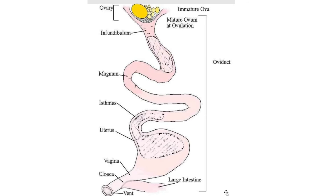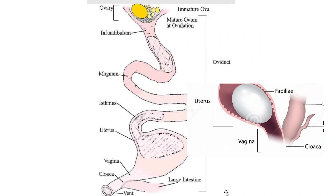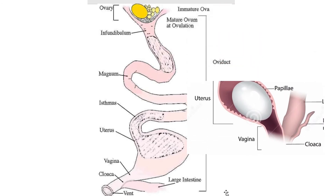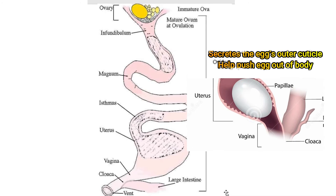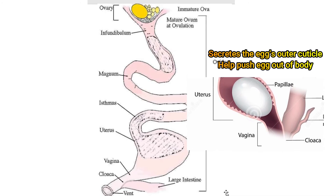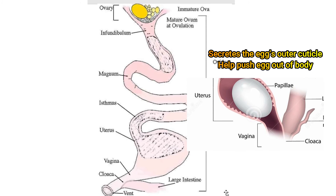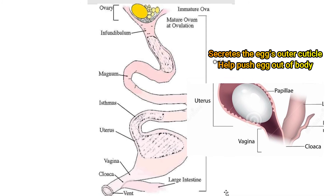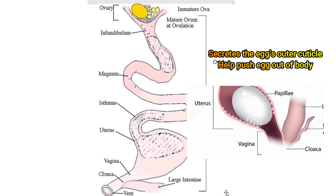The last section of the oviduct is the vagina, which is about 4 to 5 inches long. The vagina does not really play a part in egg formation, but is important in the laying of the egg. The vagina is made of muscle that helps push the egg out of the hen's body. The bloom or cuticle forms on the egg in the vagina prior to oviposition, or the laying of the fully formed egg. The egg travels through the oviduct small end first, but turns in the vagina and comes out large end first.